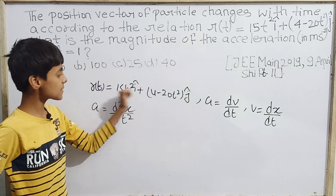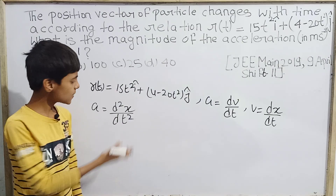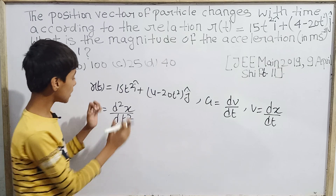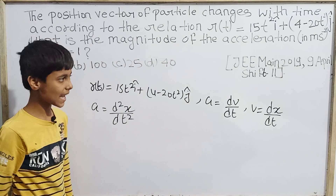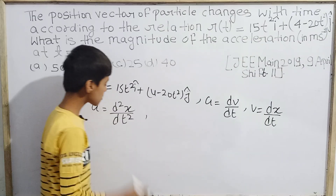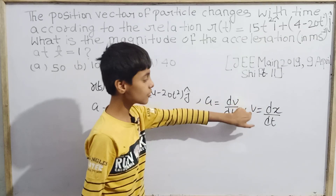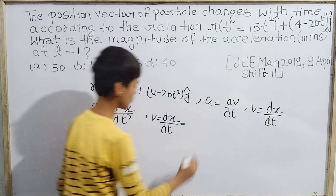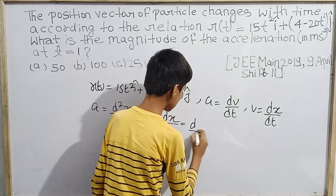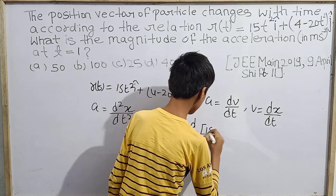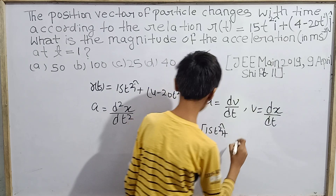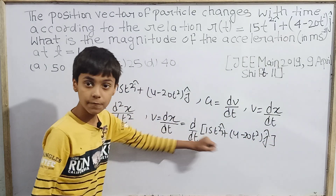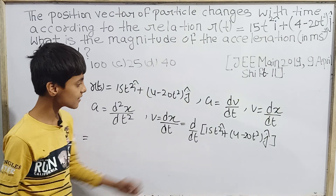Since x and r play the same role here, if we double differentiate r we get the acceleration. Let's first find the velocity v = dr/dt, which is the differentiation of 15t² î + (4 − 20t²) ĵ with respect to time.